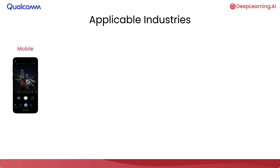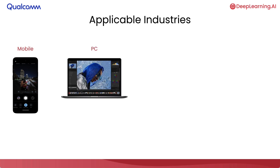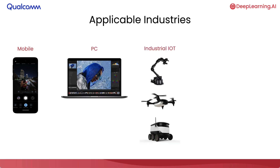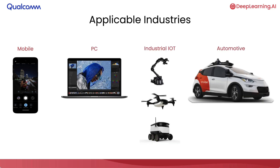The most popular industries where on-device AI is applicable include the mobile smartphone industry, the PC industry, the industrial IoT industry, as well as the automotive industry.